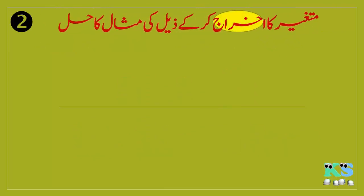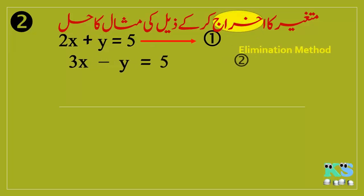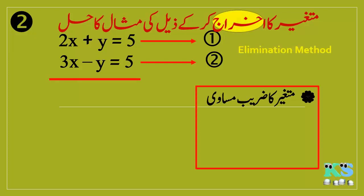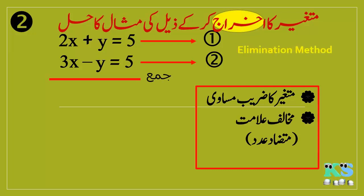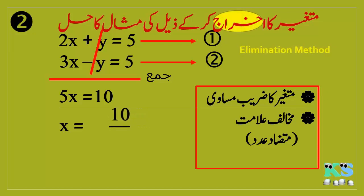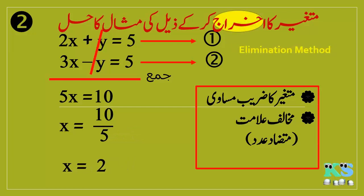Example No.2 کو Elimination Method کے ذریعے حل کریں گے۔ Equation No.1 اور Equation No.2 میں Y کا coefficient مساوی ہے اور مخالف نشانات میں ہے، اس لیے ہم دونوں Equations کو جمع کریں گے۔ Plus Y اور minus Y cancel ہوں گے۔ 2X plus 3X equal to 5X اور 5 plus 5 equal to 10، تو 5X equal to 10، X equal to 10 divided by 5، X equal to 2۔